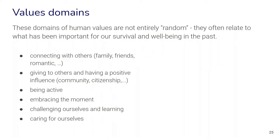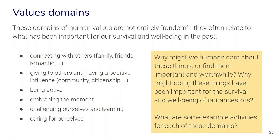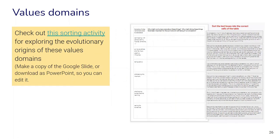With these domains it's interesting to reflect on the fact that even though we each individually identify our own values, we as humans often share a number of values. These values domains can help us think about this, because we share an evolutionary history and these kinds of values often relate to what has been important for our survival and well-being in the past. You can think about why we humans might care about these things today, and why doing these things may have been important for our ancestors' survival. A sorting activity helps students think about these questions and sort example answers into the right values domains.